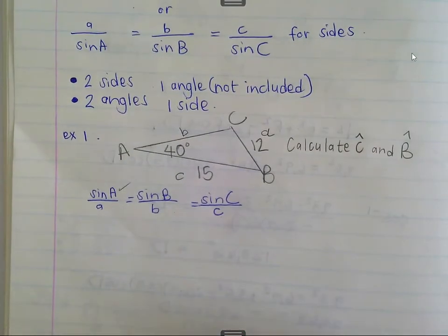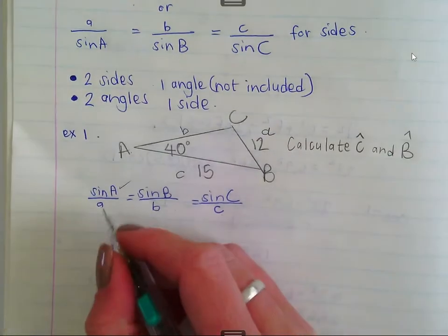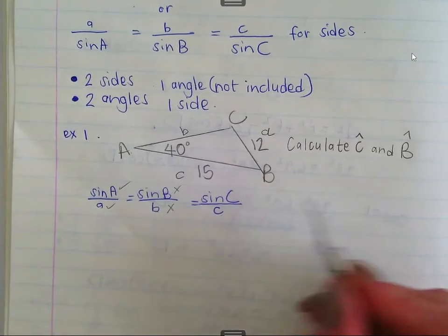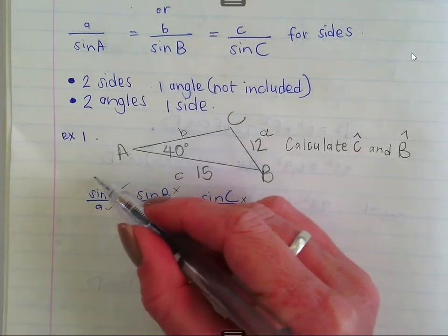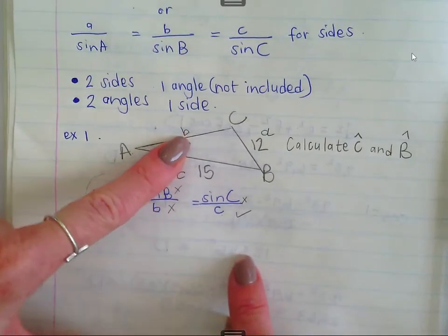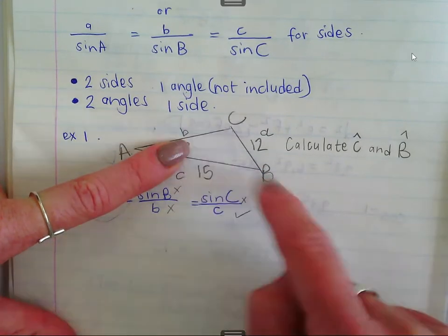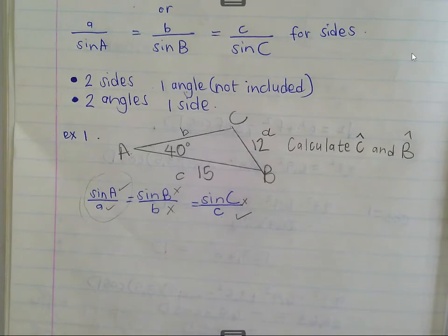Looking at what information is available: I have angle A at 40 degrees, I have side a - yes. I don't have angle B, I don't have side b, I don't have angle C, but I do have side c. Now do you notice that we have one full ratio where we have both the angle and the side? If angle A was not included - if, say, you had angle B - you wouldn't have a full ratio. You would have an unknown in each one, and therefore you wouldn't be able to use the sine rule. That's why the angle must not be included.